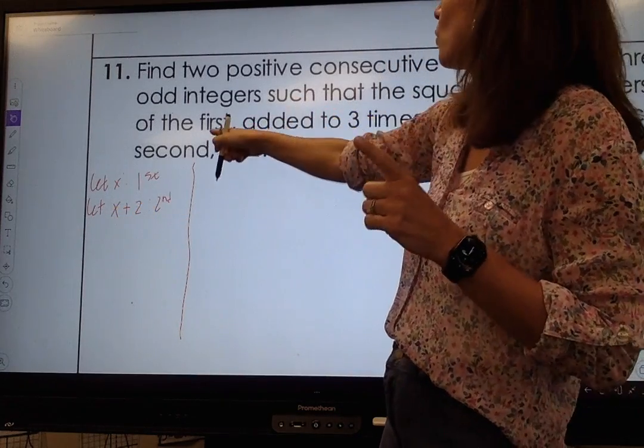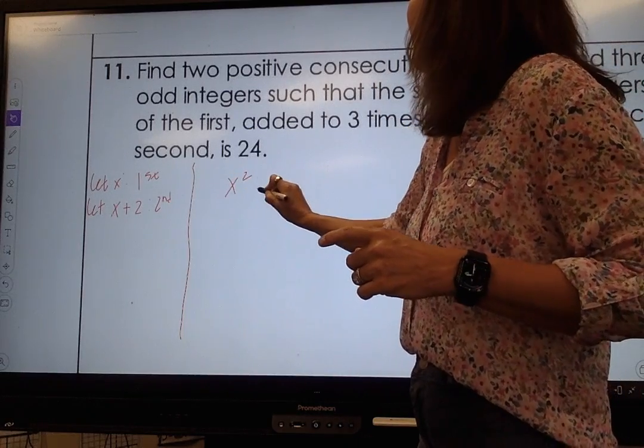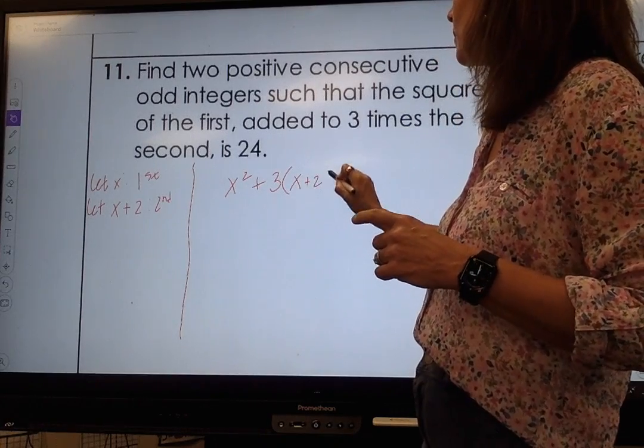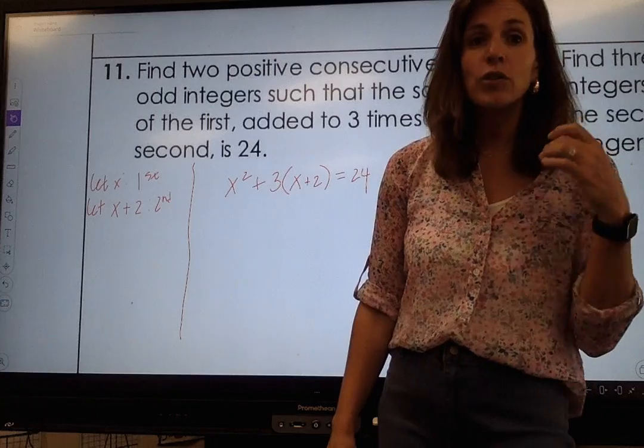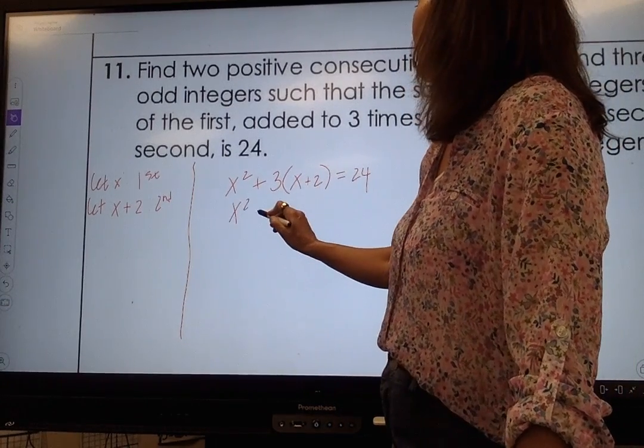It says such that the square of the first one, x squared, added to 3 times the second, which is 3 times the second, is 24. That is a literal translation. And then I'm going to distribute that 3.